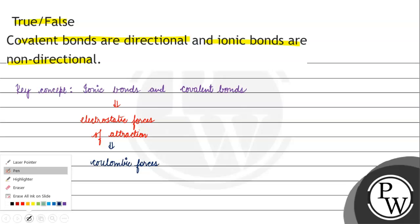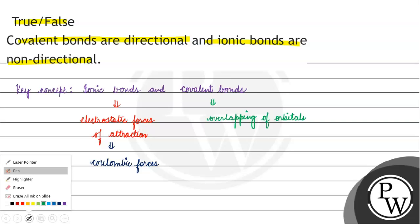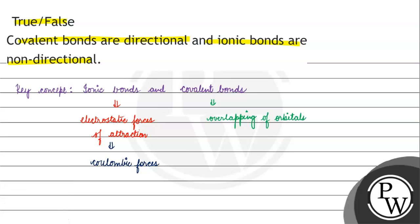If we talk about covalent bonds, then in covalent bonds we have overlapping of orbitals. So, to what extent do we have to depend on the energy of orbitals? Orbitals orientation, and the symmetry of the orbitals.